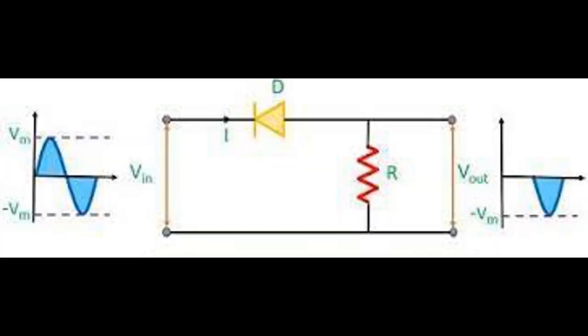A clipper circuit in which the diode is connected in series to the input signal and that attenuates a positive portion of the waveform is termed as positive clipper.